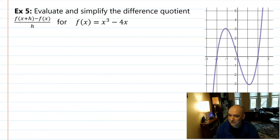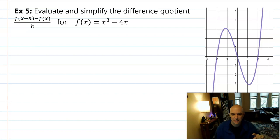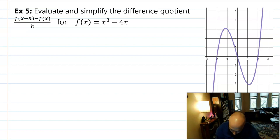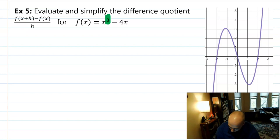In this one it might be hard to know when you're done. General advice: you know you're done when the h that started on the bottom cancels out. If that h is still there, you have work to do. This is the difference quotient for 1 over x.